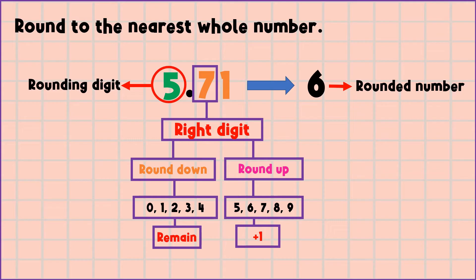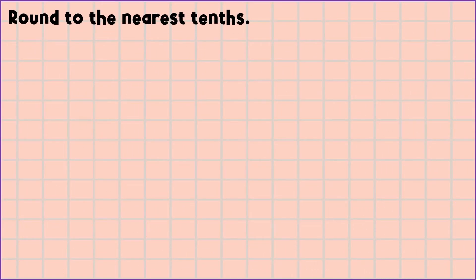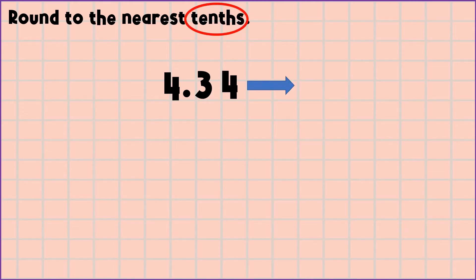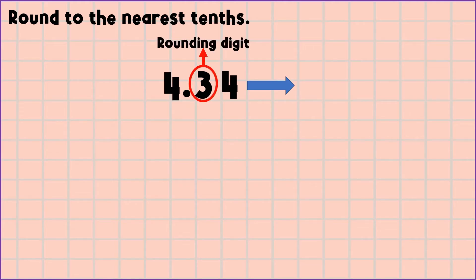Another example: round to the nearest tenths. So what is the rounding place? It is tenths. What digit lies on the tenths place? 3 is the rounding digit. Next, we are going to look at the digit to the right of 3, which is 4.